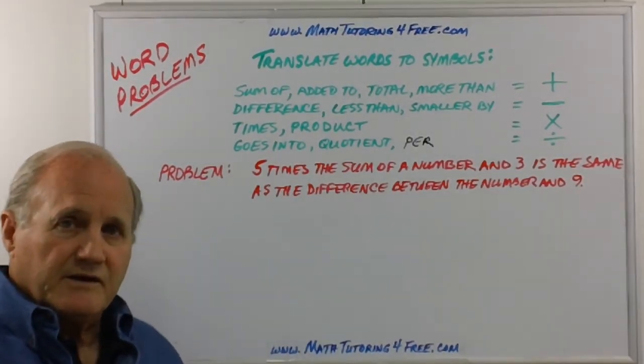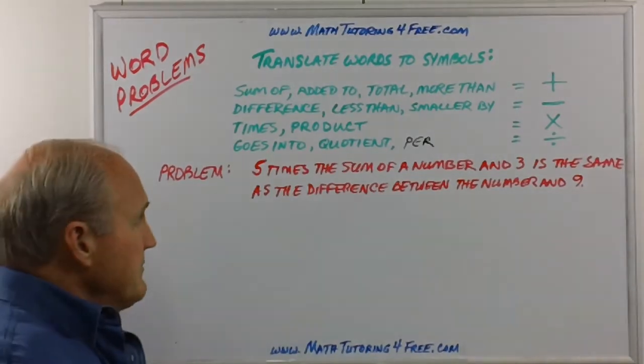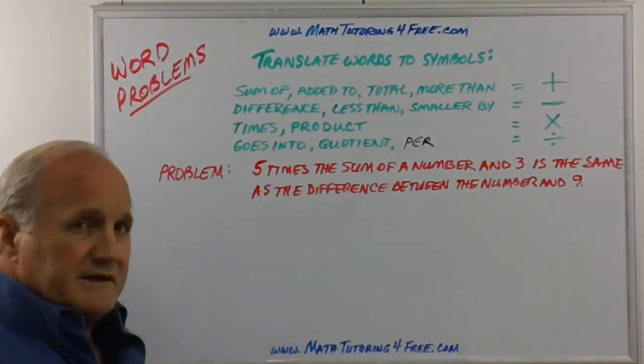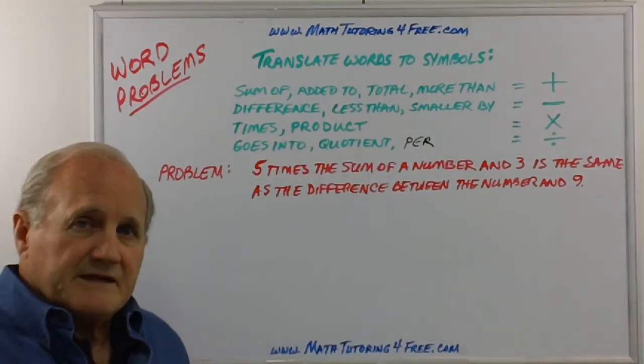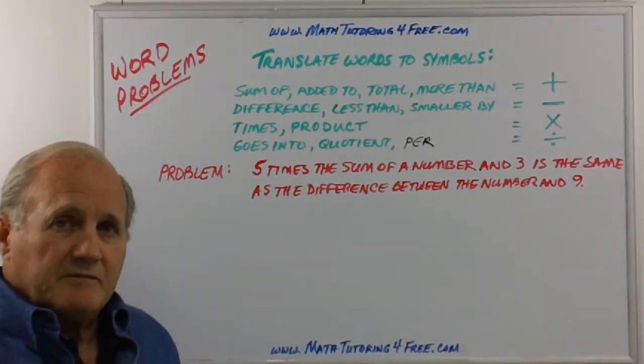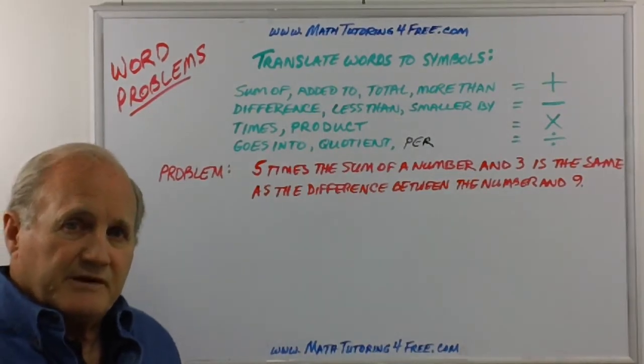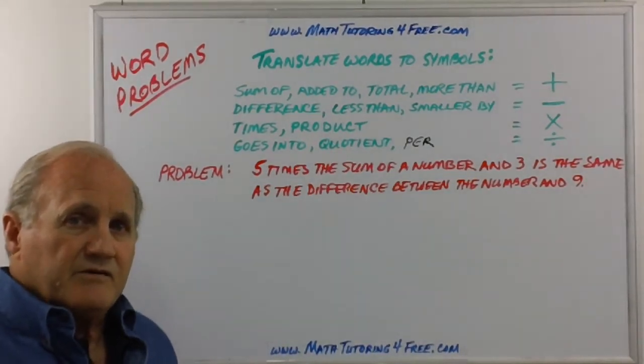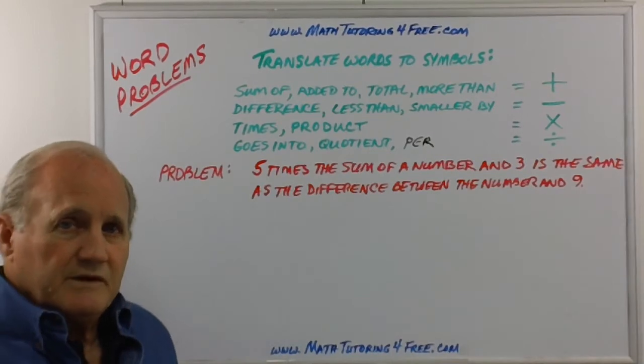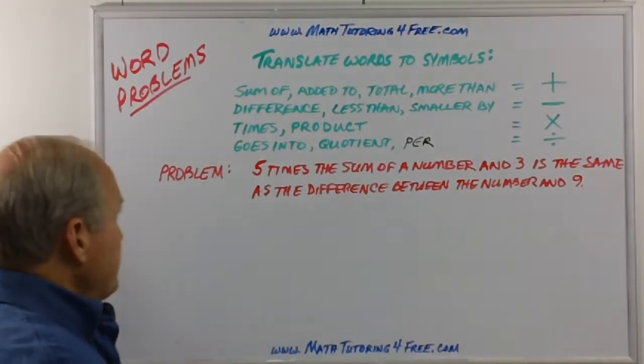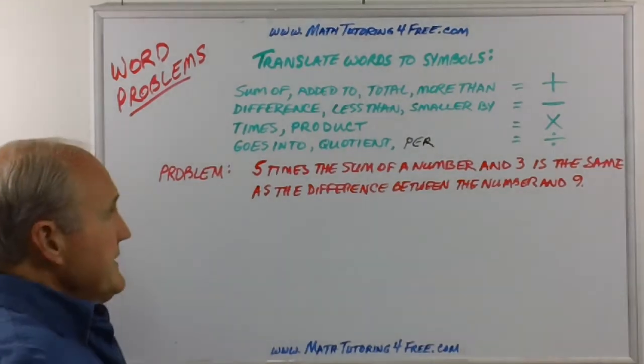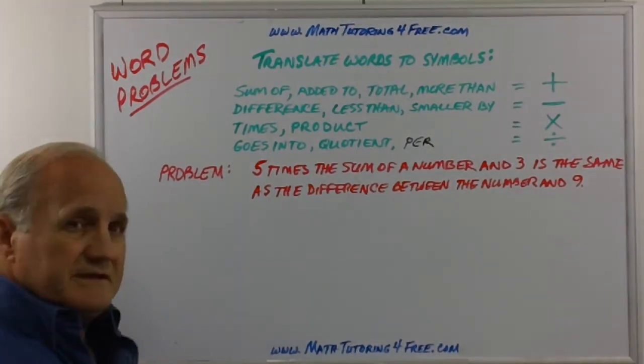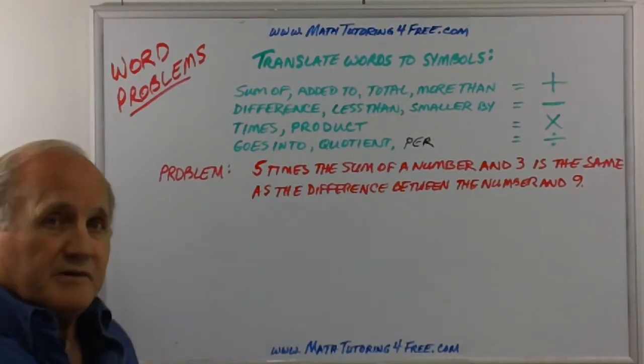Let's take one example here, try to dissect this small problem and see if that is a start towards helping you understand how to switch from words to math symbols. This problem states that five times the sum of a number and three is the same as the difference between the number and nine.